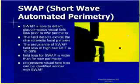The short-wave automated perimetry, or SWAP, is a software program present in the Octopus. The SWAP is able to detect glaucomatous visual field loss prior to white-on-white perimetry, because it uses a blue target on a yellow background. The field defects exhibit a characteristic focal pattern. The prevalence of SWAP field loss in high-risk ocular hypertension is 15 to 30 percent.